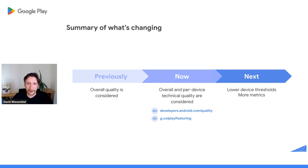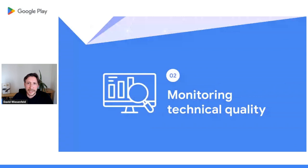I also wanted to make you aware of two great new pages we've recently published about quality. The first is developer.android.com/quality, which goes into detail about how Play thinks about quality, including technical quality. The second one is about how featuring on Play works and what part quality has in this. We've discussed how Play is updating our technical quality bar and sharpening our focus on user experience, and explained why this should matter to you. Now, we'll deep dive into how you can monitor the technical quality of your app or game.